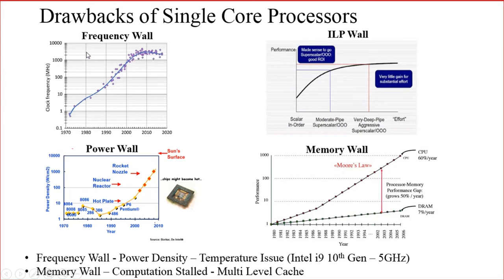That is around 2000 to 3000 megahertz, which means around 3 GHz. Currently the 10th generation processor is operating on more than 5 GHz when overclocked. So the clock frequency that can be supplied to a processor was increasing year by year and now we can supply around 5 GHz. But we need to keep in mind: we cannot keep on increasing this clock frequency.